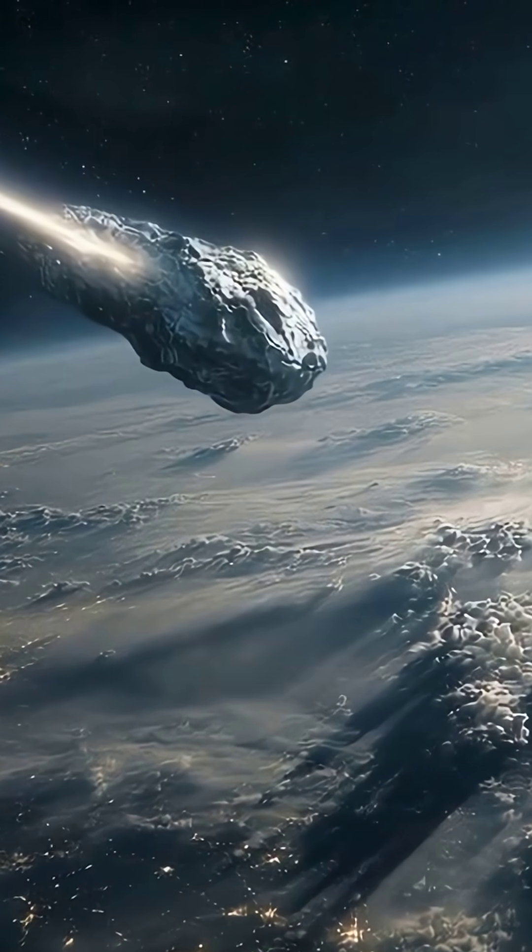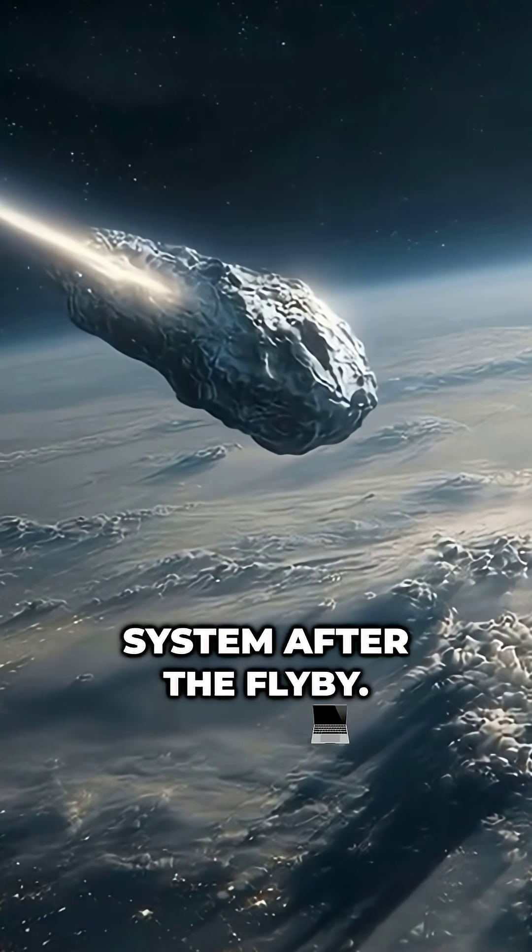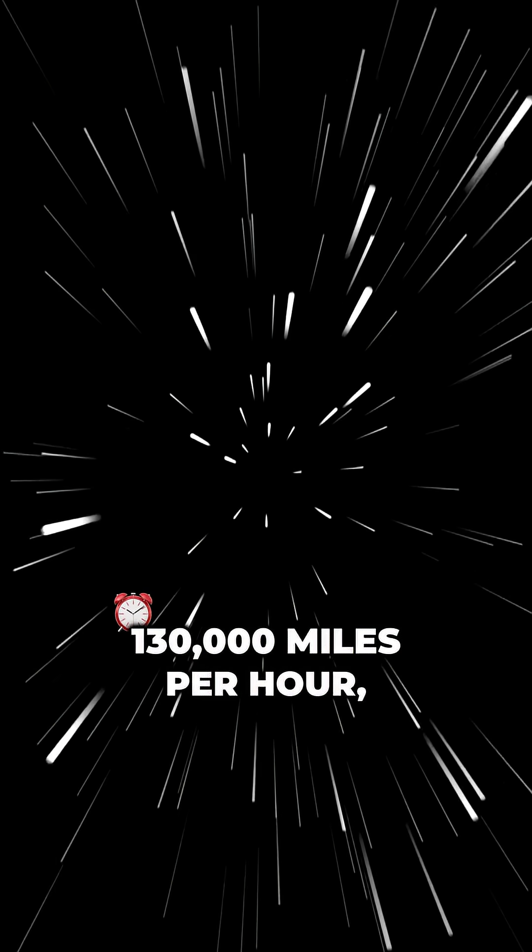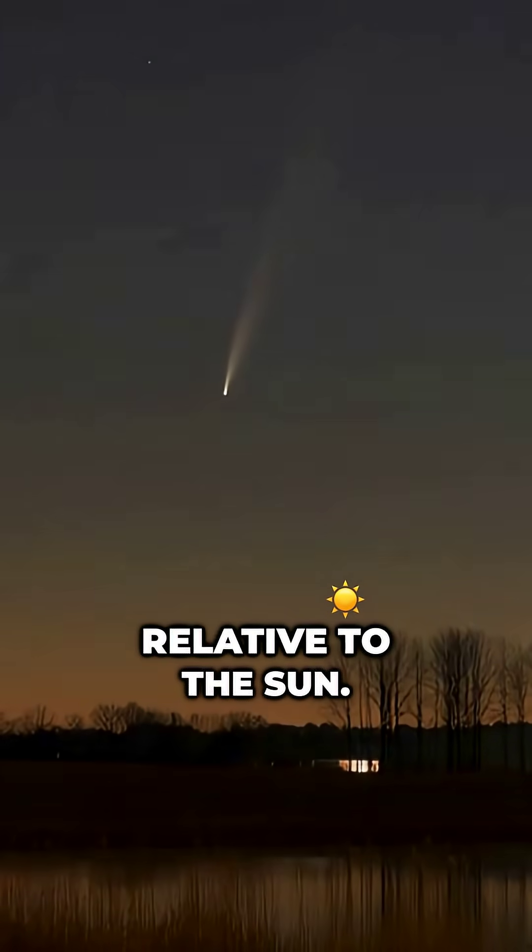3i/Atlas is on a hyperbolic path, meaning it's not bound to the sun and will leave our solar system after the flyby. It's moving incredibly fast, around 60 kilometers per second, 130,000 miles per hour, relative to the sun.